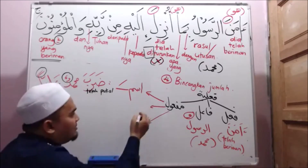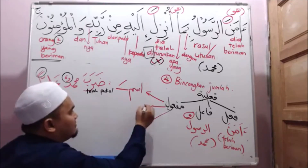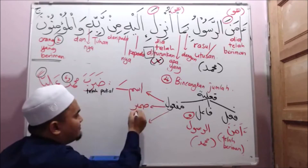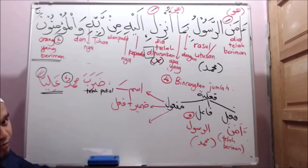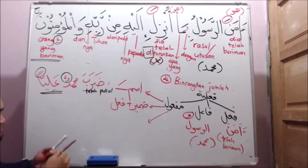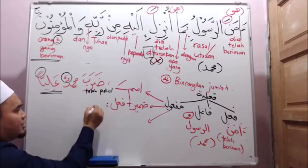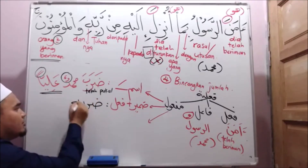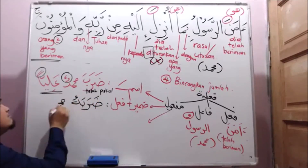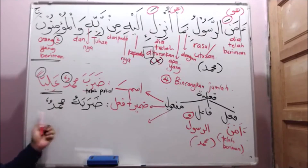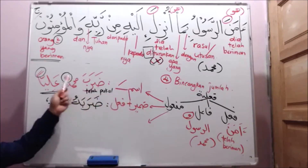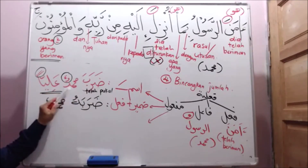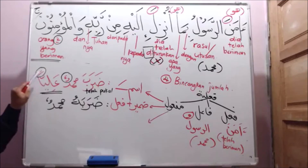Dua lagi ni. Yang kedua: maf'ul dalam bentuk dhamir yang melekat dengan fe'il. Contohnya: Darabahu Muhammadun. Darabahu Muhammadun - tiga patah perkataan juga. Mana kalimah perbuatan tadi? Daraba. Siapa yang pukul? Muhammad - dia fa'il sebab hujungnya berbaris depan. Muhammad pukul siapa? Ada yang kena pukul: iaitu 'hu' ni tuan-tuan. Jadi macam mana kita tahu 'hu' itu boleh menjadi maf'ul sebab dia tak berbaris atas pun? Ada kaedah: dhamir yang melekat dengan fe'il - maka otomatik 'hu' tu menjadi maf'ul.